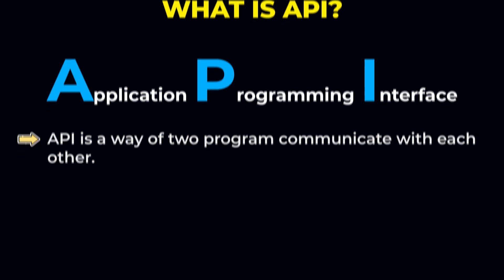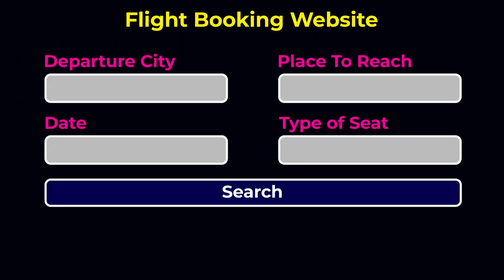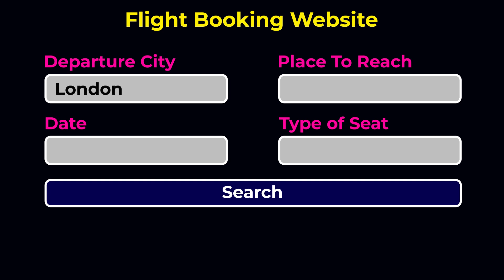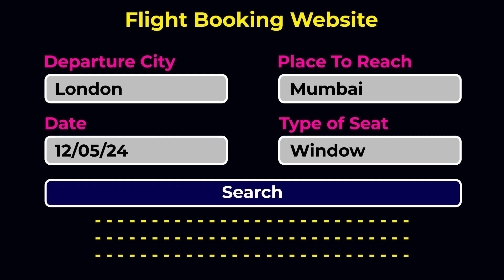You have probably visited a website that books flight tickets or train tickets. In that application — let's say Emirates — you write your departure city, say London, your destination, say Mumbai, enter your dates and seat type, and search for flights. It will display flight details, and that's possible because of API. We call the API and it gets the data from the server and gives us the results.